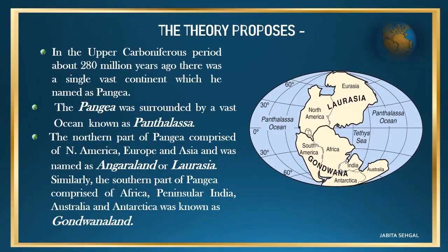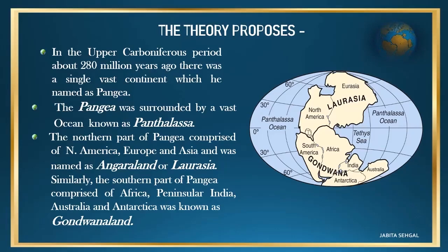The theory proposes that in the upper Carboniferous period, about 280 million years ago, there was a single vast continent which he named Pangaea. The Pangaea was surrounded by a vast ocean known as Panthalassa. The northern part of Pangaea comprised of North America, Europe and Asia, and was named Angara Land or Laurasia.